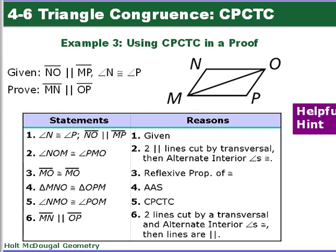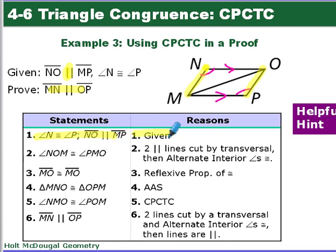This is another proof — a little more complicated because it has parallel lines. We're told that NO is parallel to MP, and angle N is congruent to angle P. We want to show that MN is parallel to OP. We're going to show the triangles are congruent, then use the angles and a converse theorem to prove those lines are parallel.